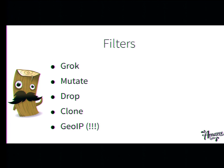Covering some filters: you can use Grok, which is basically regex on steroids. You can have a Grok parser which goes through your log line, names every part of it, and after naming them they will be available as indexed entities of your event. You can mutate things — remove or replace parts of your message. You can drop things: if you have debug flag log messages, you can find a way to drop them. You can clone them, or do GeoIP based on IP addresses.